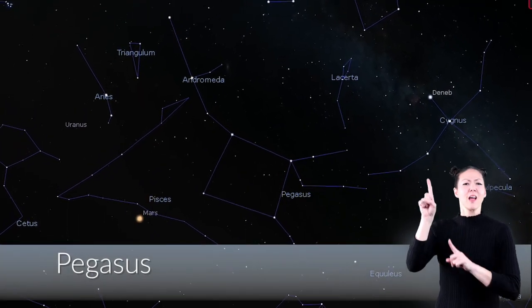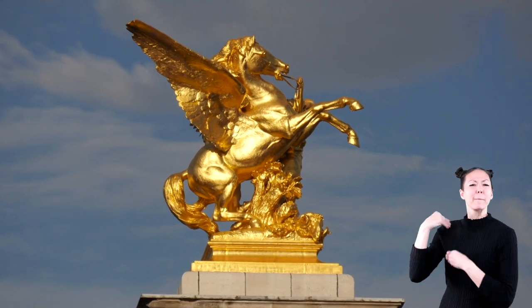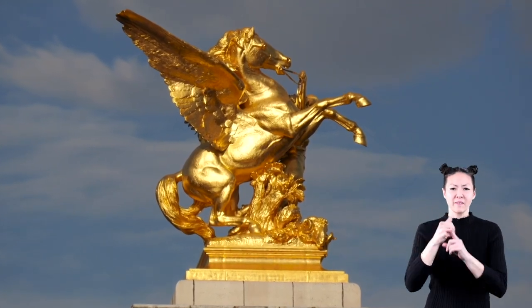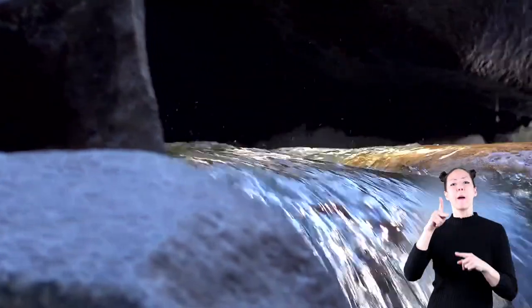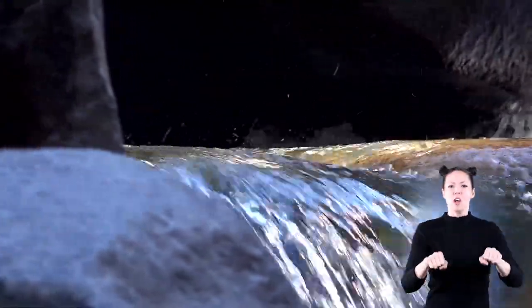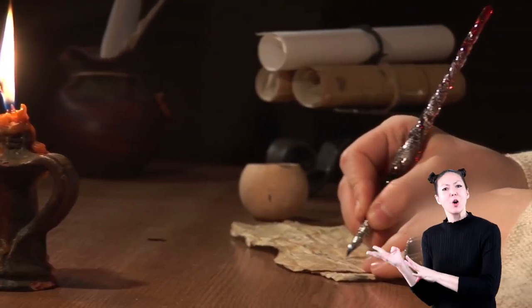Pegasus is a constellation in the northern sky. In Greek mythology, Pegasus is a magical horse with wings. One of the stories about Pegasus says that his hooves dug out a spring and anyone who drank the water was given the gift of writing poetry.